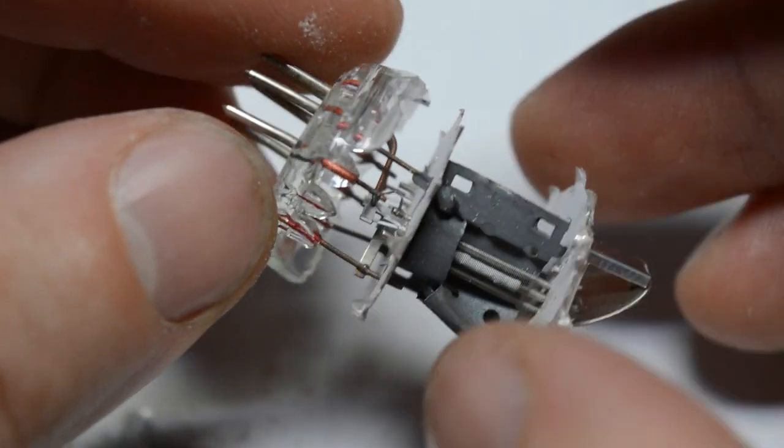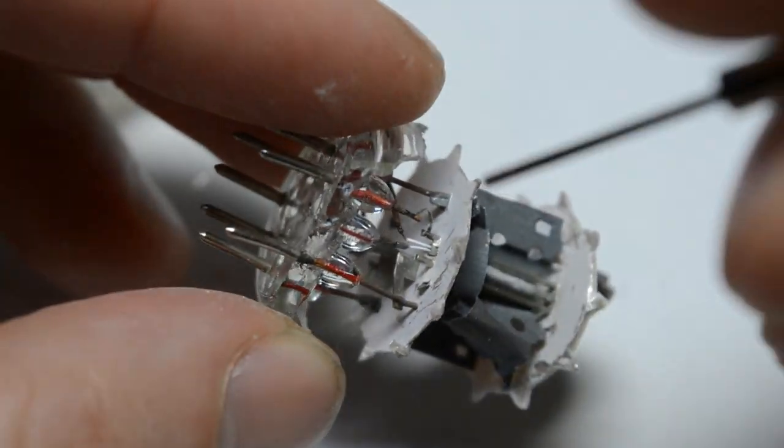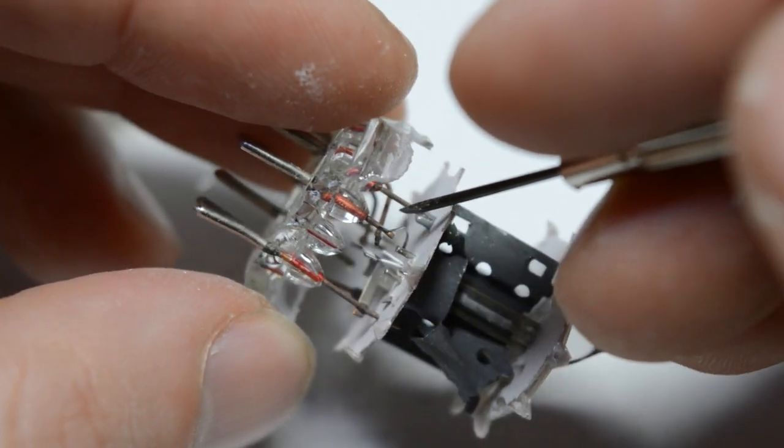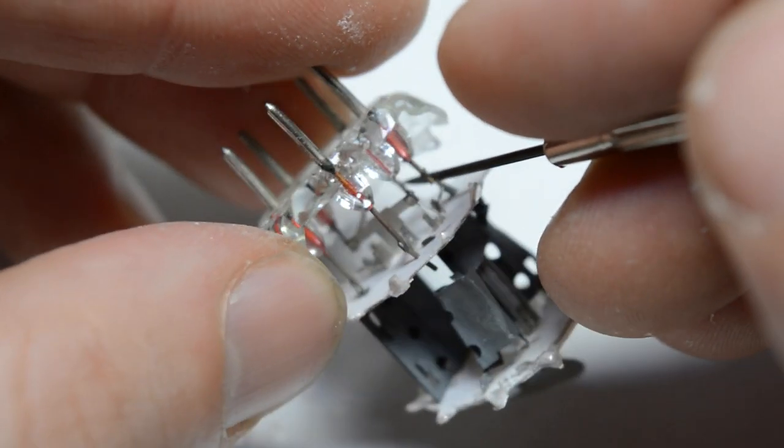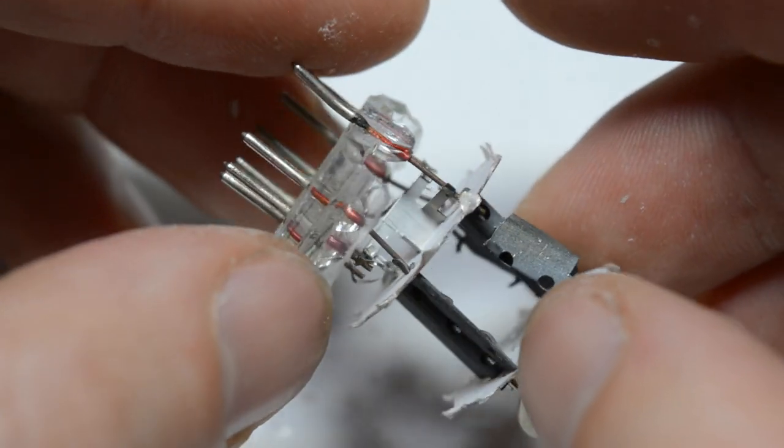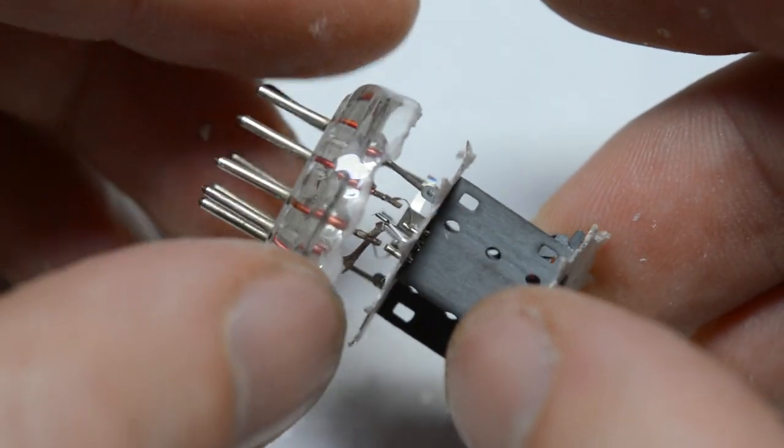Also, a neat trick that they did with this tube was they connected the two filaments in series. So we can either supply this tube with 12.6 volts, both filaments at the same time, or each filament individually at 6.3.